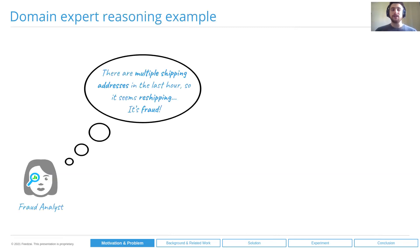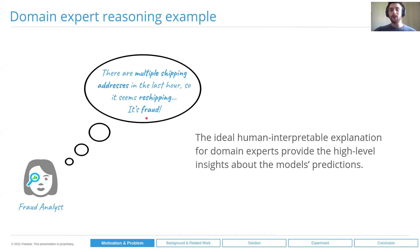One possible example of domain expert reasoning in the fraud domain is something like: 'There are multiple shipping addresses in the last hour, so it seems through shipping, it's fraud.' Here we can see two different patterns — multiple shipping addresses and through shipping — that when the fraud analyst thinks about those two patterns, they conclude that some transaction or event is fraudulent. So the ideal human-interpretable explanation for domain experts will provide some high-level insights about the model's predictions.